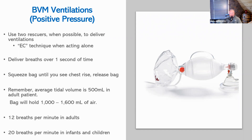Deliver about 12 breaths per minute in adults, and at least 20 breaths per minute in infants and children, because their basal metabolic rate and base respiratory rate are increased—we want to keep up with their demand. If ventilating a pediatric patient, ventilate at 20 breaths per minute or more.